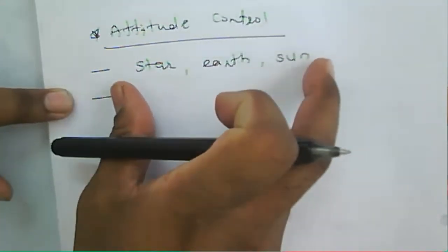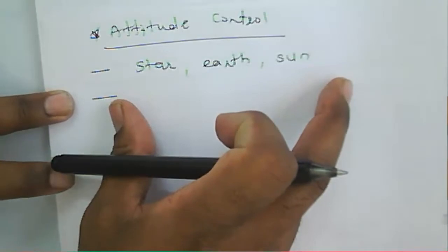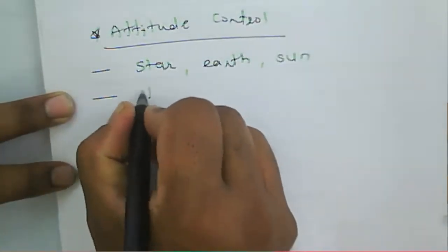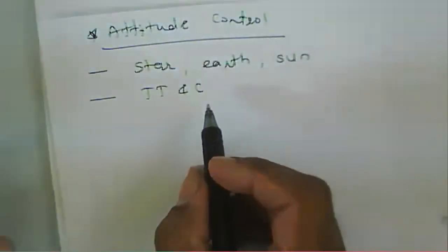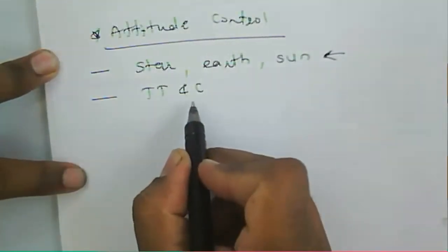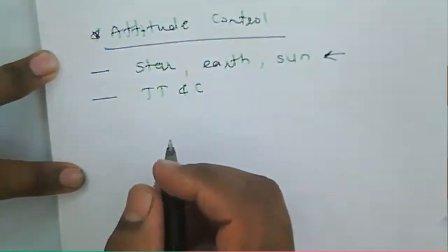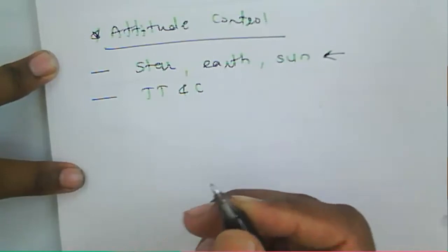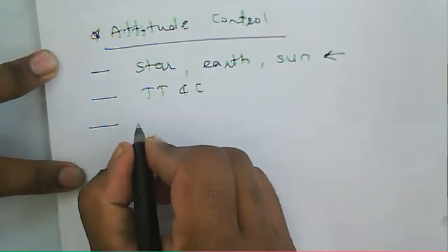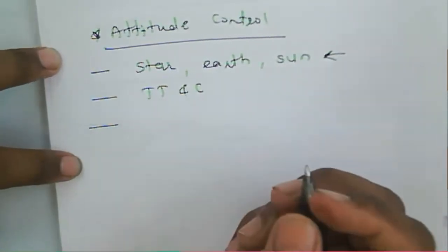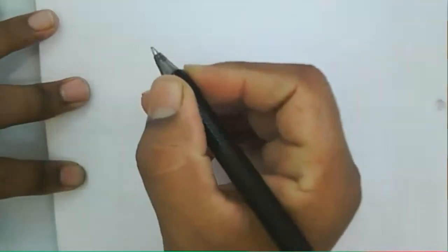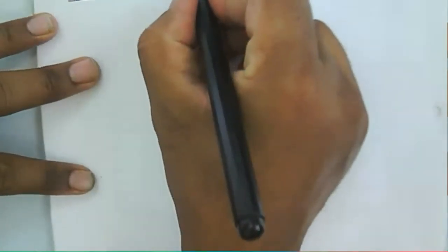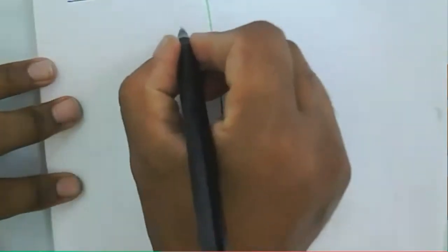The sensor data is sent to the earth station via the TTC command — Telemetry, Tracking, and Command. The data received from the sensors is sent to the earth station for correction of the satellite orbit. There are four horizon sensors present at the Earth's horizon used for this purpose. I'll now describe how the thruster model controls stabilization.